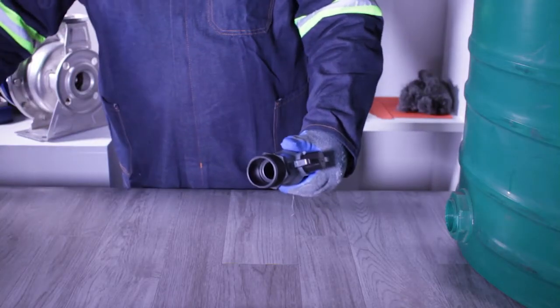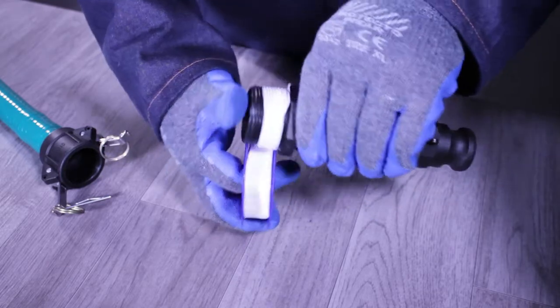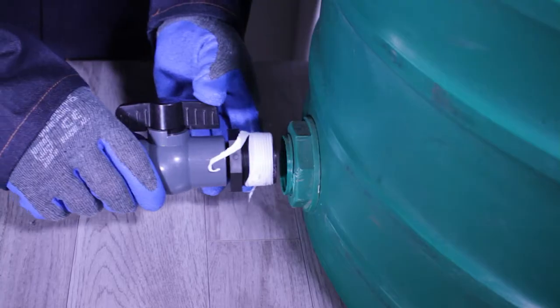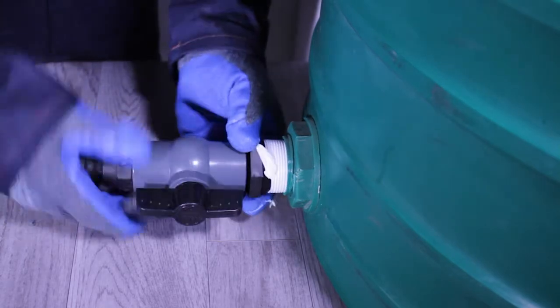Apply the thread tape to the reducing bush in a clockwise direction. Now you can connect the reducing bush and ball valve assembly to the outlet located at the bottom of the tank.